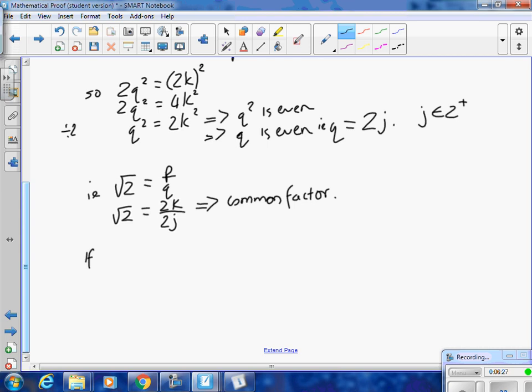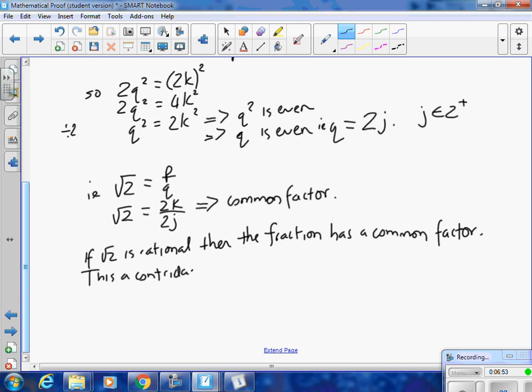So if √2 is rational, then it's going to generate a fraction with a common factor. This is a contradiction, as p over q was assumed to have no common factors.